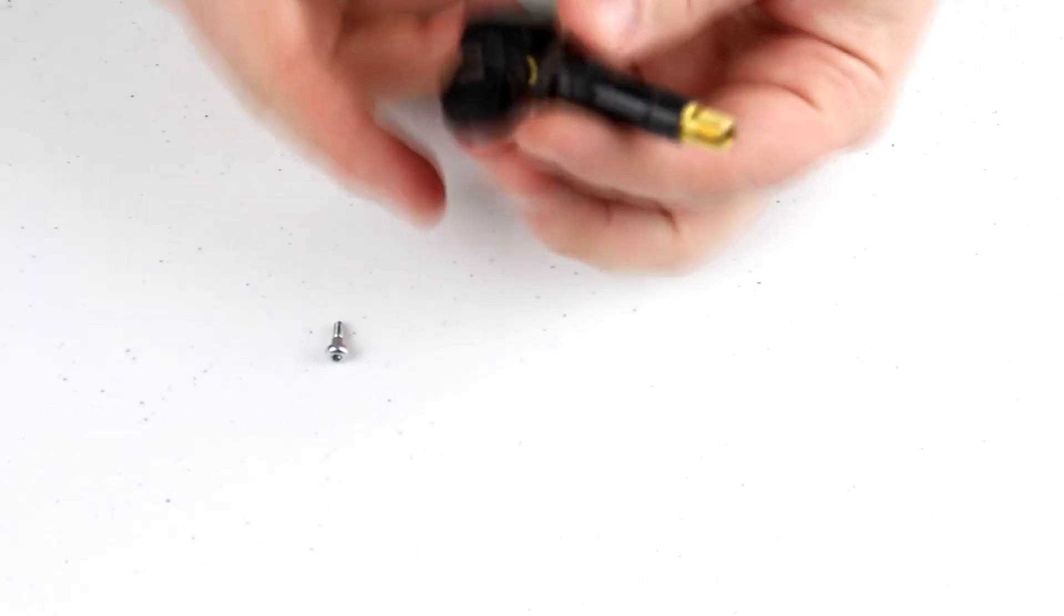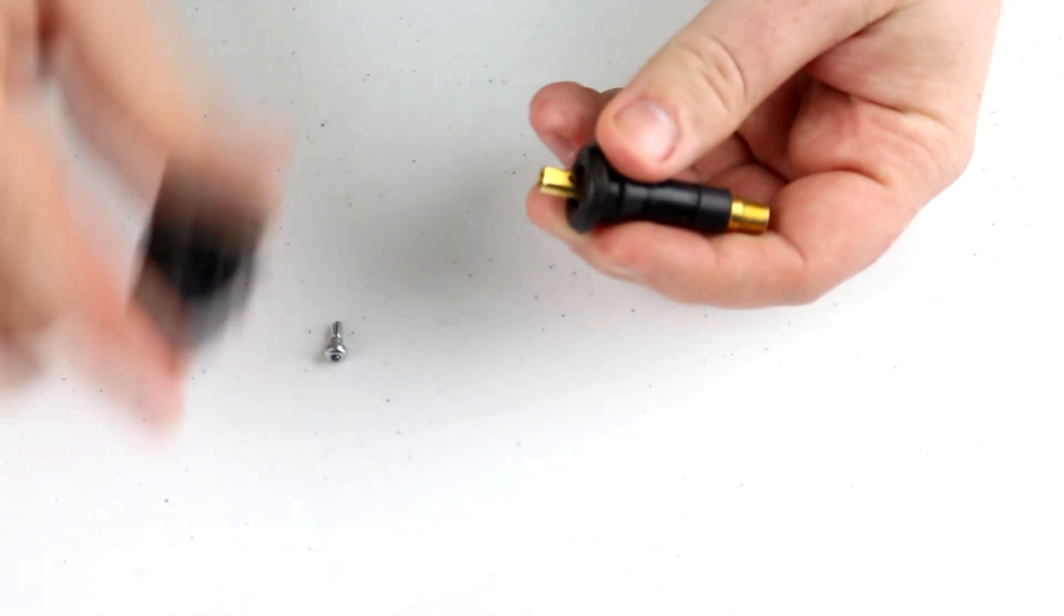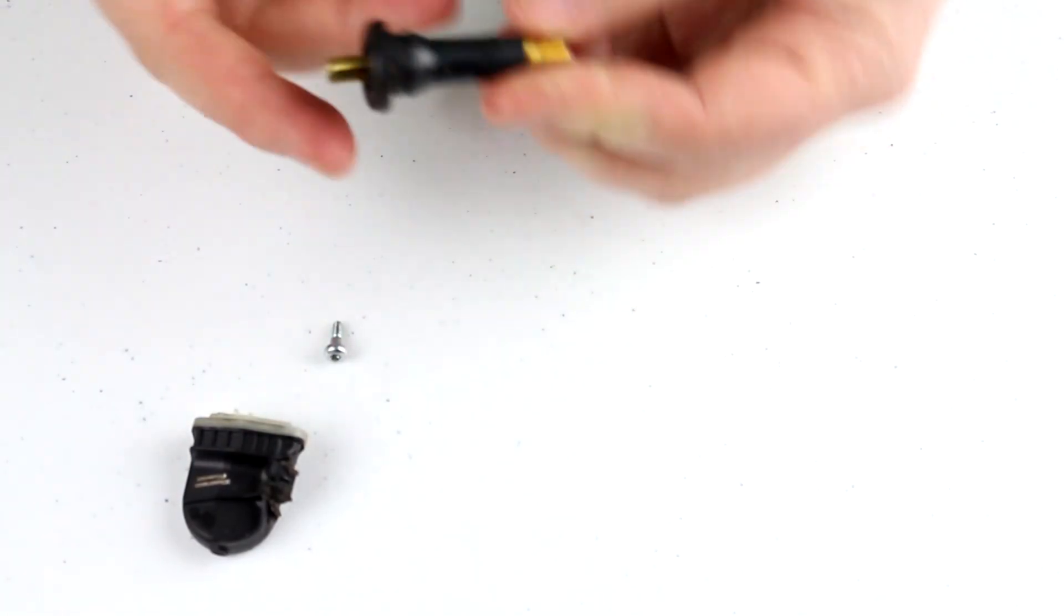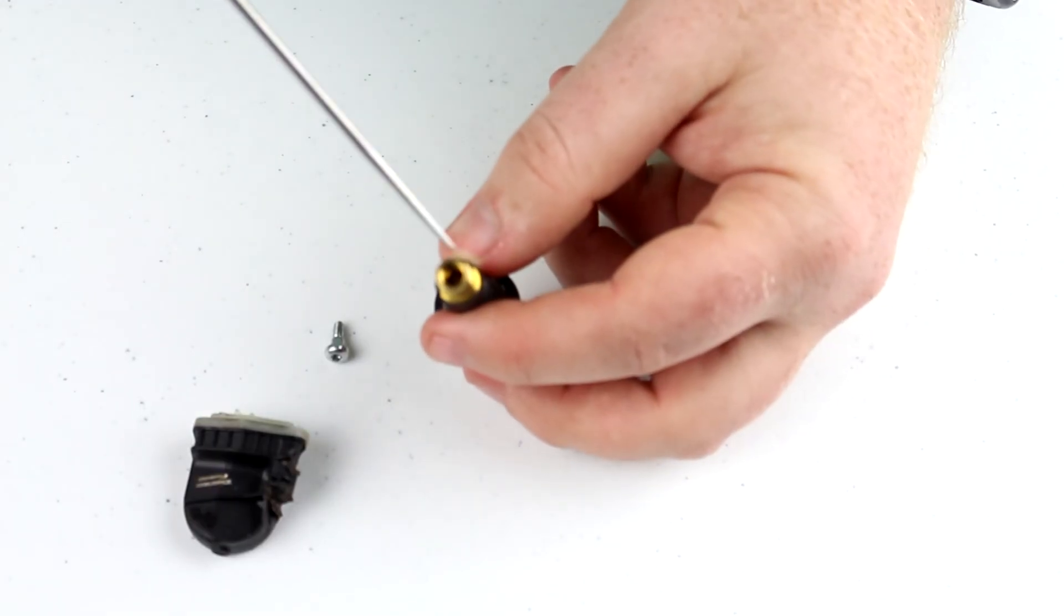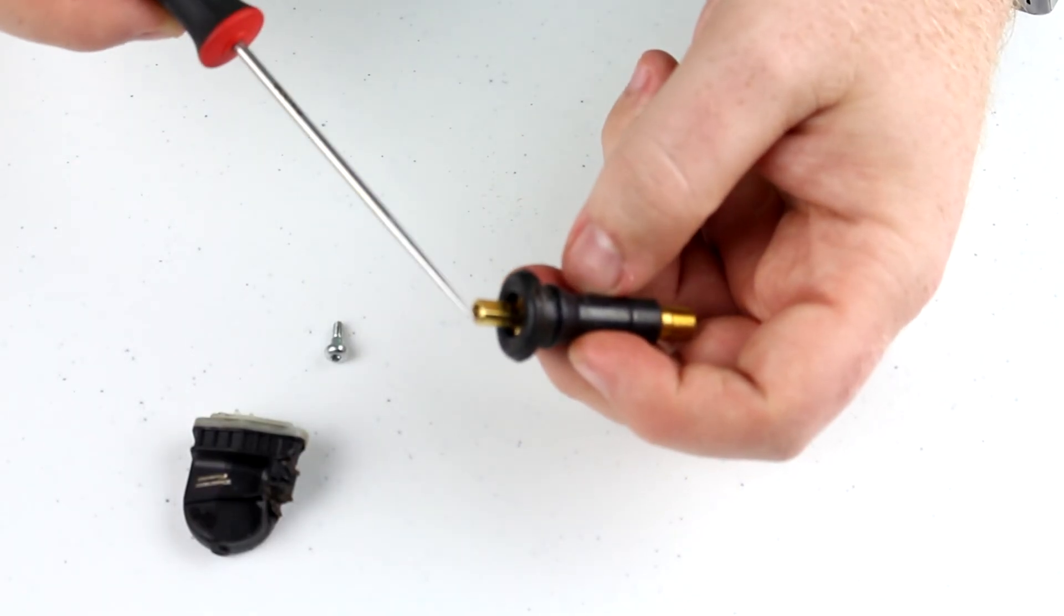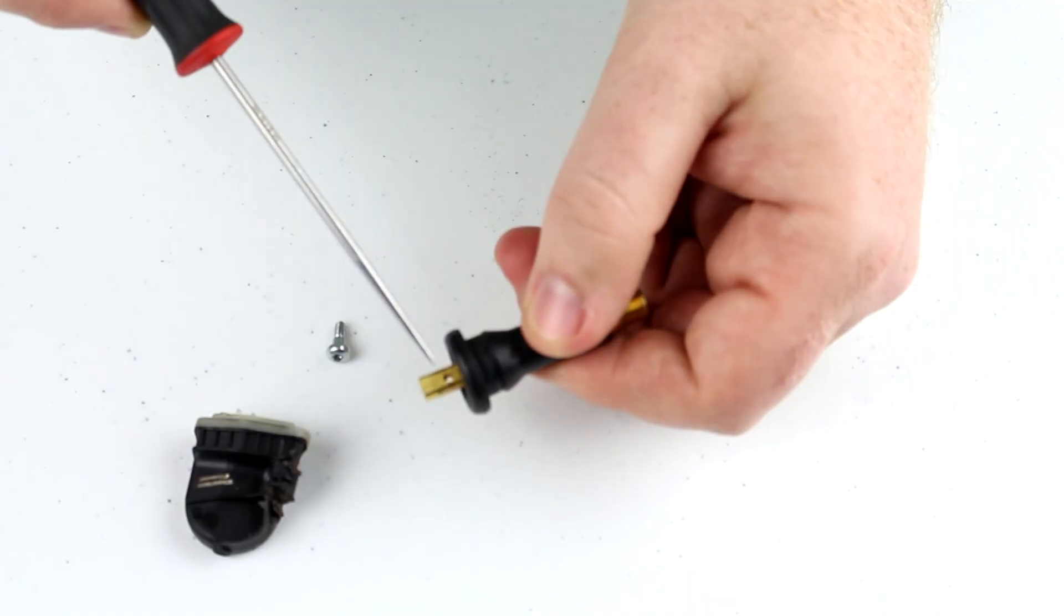All right there's the screw that came out and this just slides off and there's the stem. When you fill your tire up with air you put it in here and it doesn't come out the bottom, it comes out of this hole and this hole.